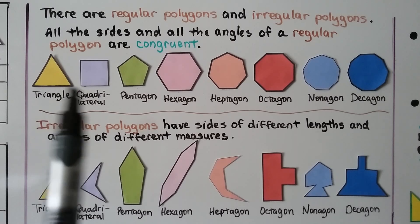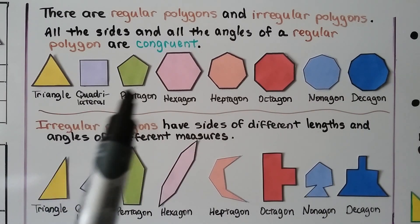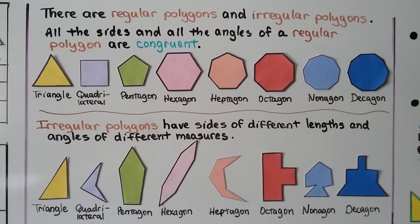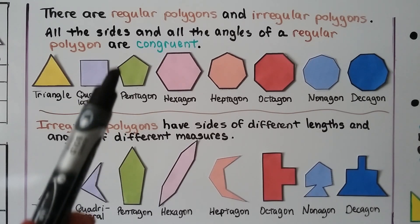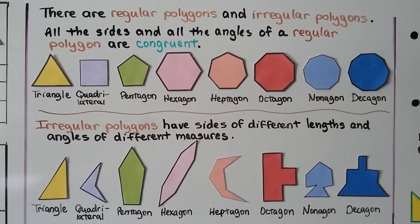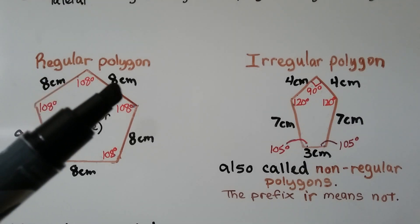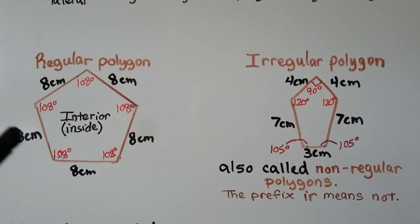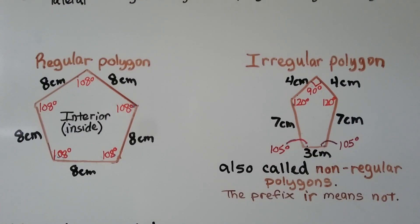These are regular polygons because each of their sides are equal to each other — they're all congruent, as are their angles. A regular pentagon will always look a certain way because it has five sides of equal length. This pentagon is a regular polygon: each side is 8 centimeters, and all the interior angles are 108 degrees.